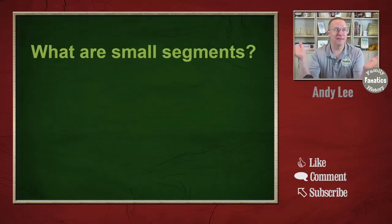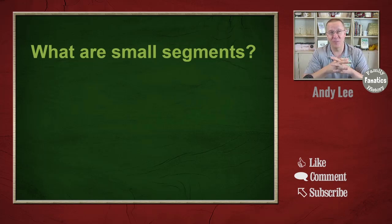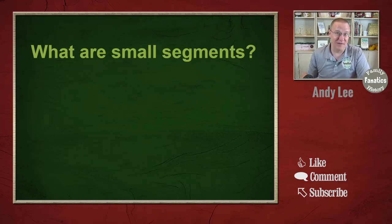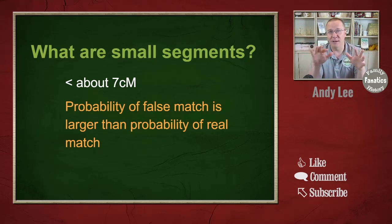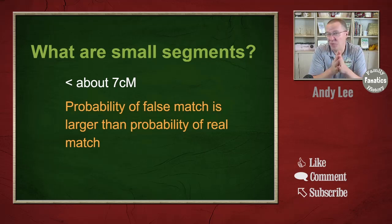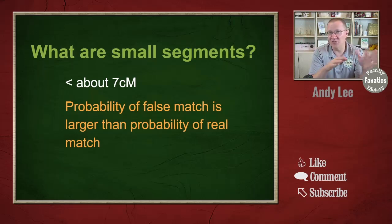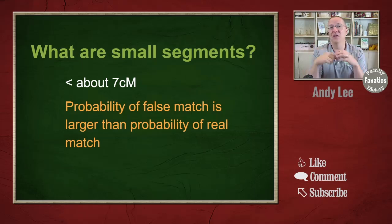Let me start with a basic question: what is a small segment to begin with? How is it really defined? With any new field, these things are somewhat fluid and there may not be an exact definition. A small segment is less than about seven centimorgans. Some people may say less than 10, some may say less than six, but somewhere around there we all agree is where small segments start.